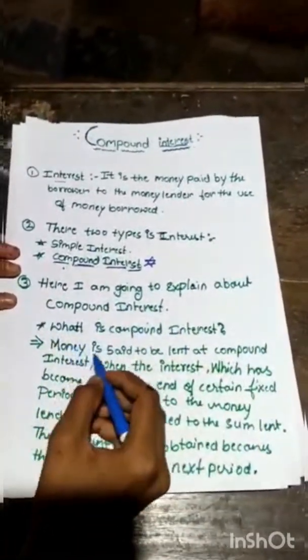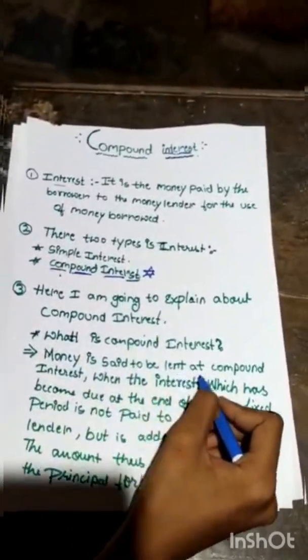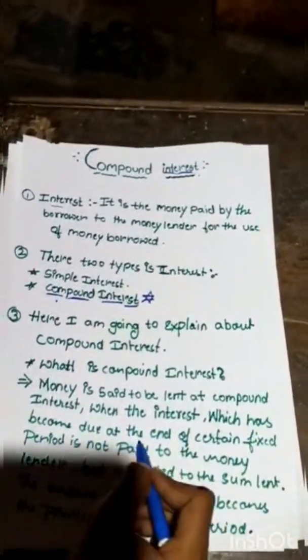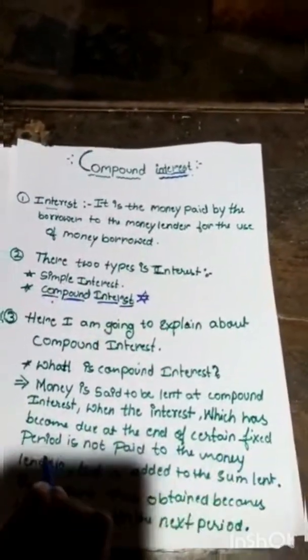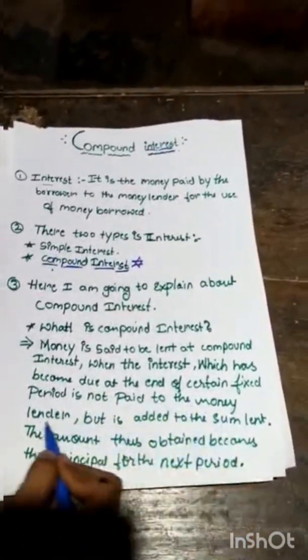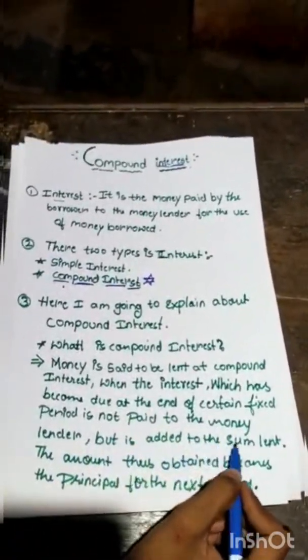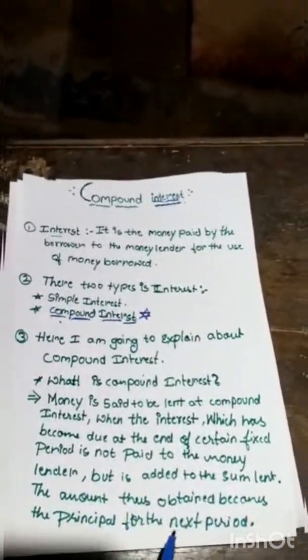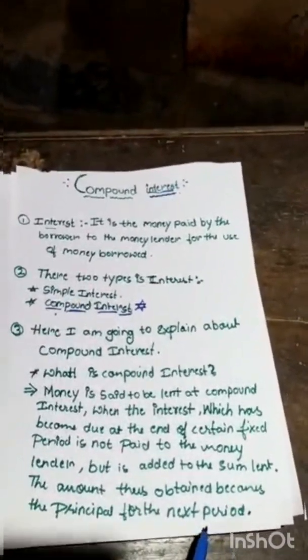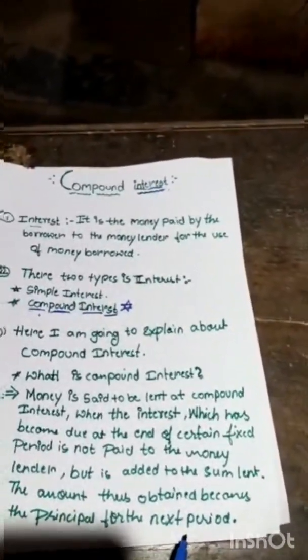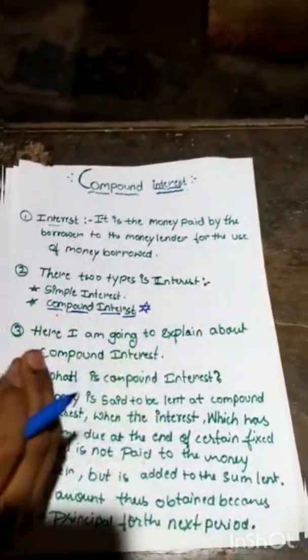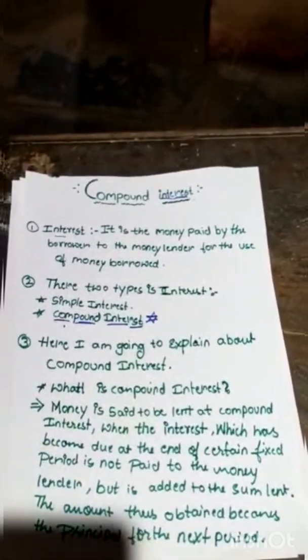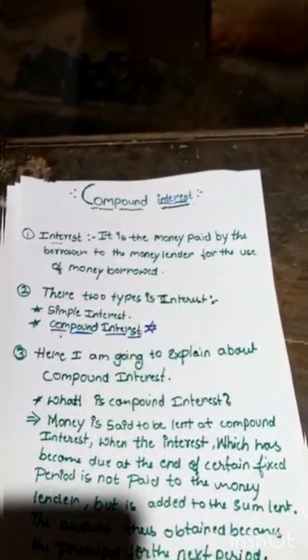What is compound interest? Money is said to be lent at compound interest when the interest which has become due at the end of a certain fixed period is not paid to the money lender but is added to the sum lent. The amount thus obtained becomes the principal for the next period. In simpler terms, the interest on a loan or deposit which is calculated based on both the initial principal and the accumulated interest from previous periods.